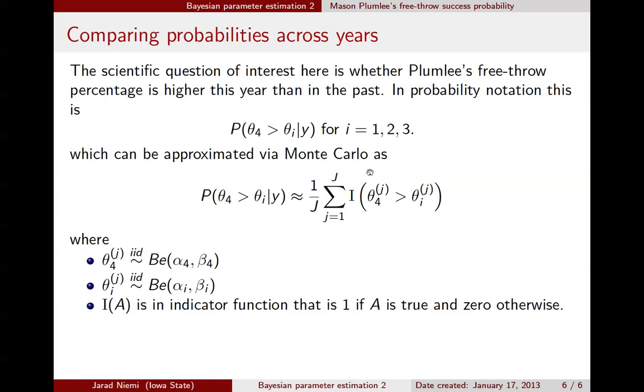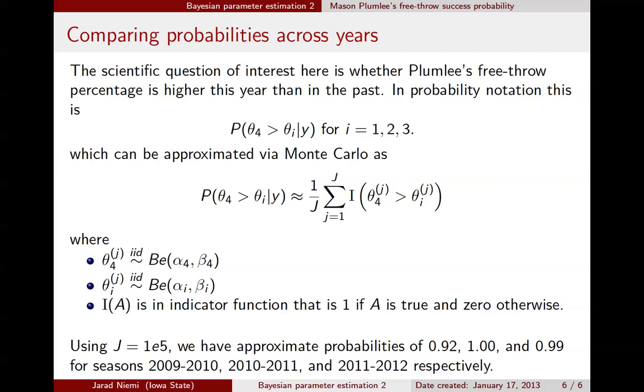And then the indicator function here just says, how many times is this draw bigger than that draw? So we're going to draw a whole bunch of samples, in fact, capital J of them. And we're going to say, how many times is our theta 4 parameter bigger than our theta i parameter? This sum of the indicators just counts how many times that occurs. We divide by j, then you get the percentage of times in our sample that that was true. If we compute this for the actual posteriors that we have, using 100,000 simulations, we have approximate probabilities of 0.92, 1.00, 0.99 for the three seasons respectively. So the probability that Plumlee is shooting better this year than in 2009-2010 is 92%.